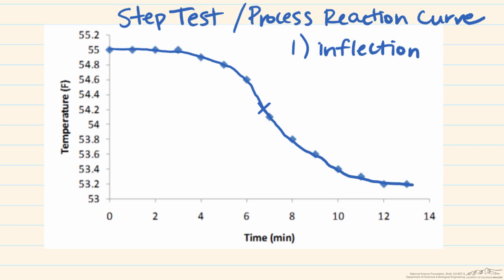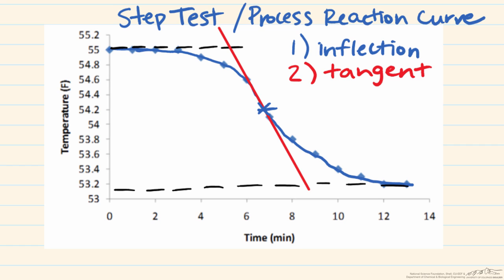And here we will just estimate the inflection point as somewhere around here. The next step is we have to develop a tangent line that runs through the inflection point. And then what we do is take a look at where the process crosses the initial value and the final value.